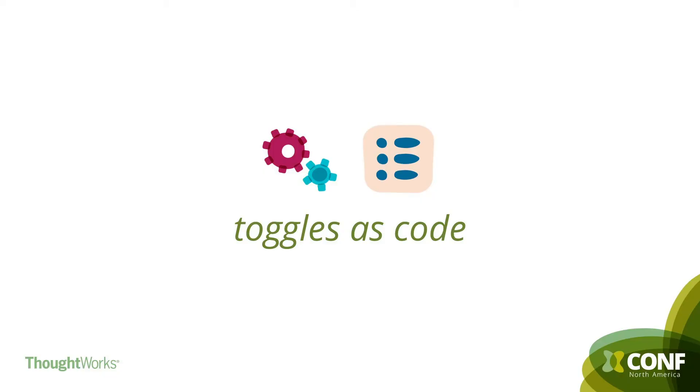One way to overcome this is by treating the toggles as code — just another way of configuring. You can treat them as configuration, version-control them, and provision them together with your continuous delivery pipeline. If you also need context for where a toggle is used, who introduced it and why, your version control system will have all this good stuff for you. That is, again, an example of making the right thing easy.